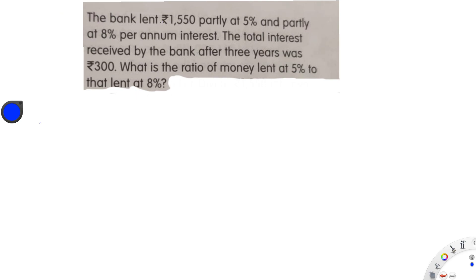The bank lent rupees 1550, partly at 5% and partly at 8% per annum interest. The bank lent a total sum of 1550 rupees, but they did not give that money as a single amount. They divided that money — some lent at 5% interest and the remaining at 8% per annum interest.